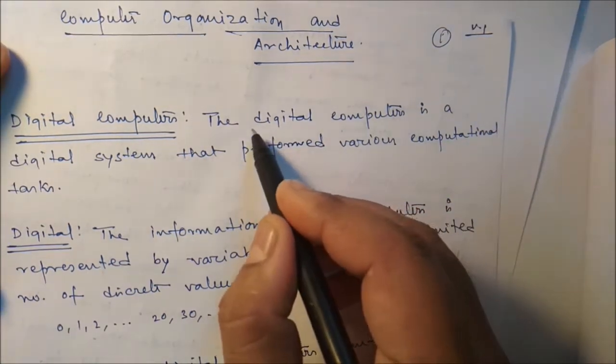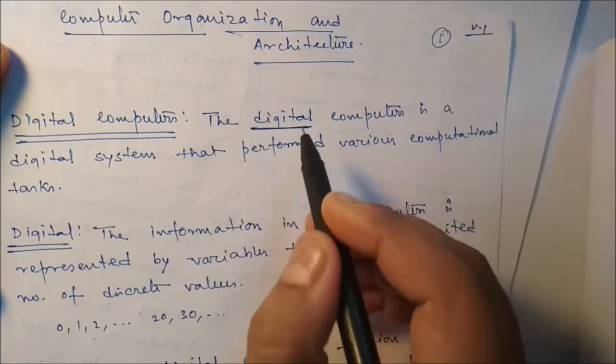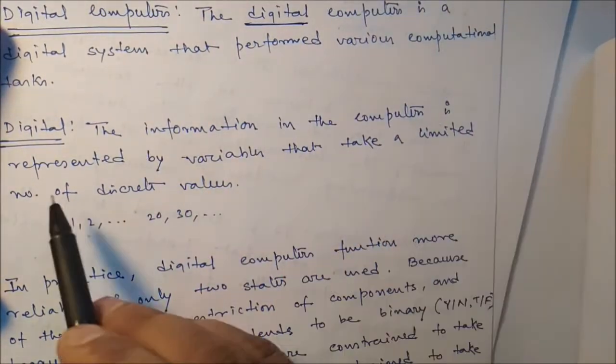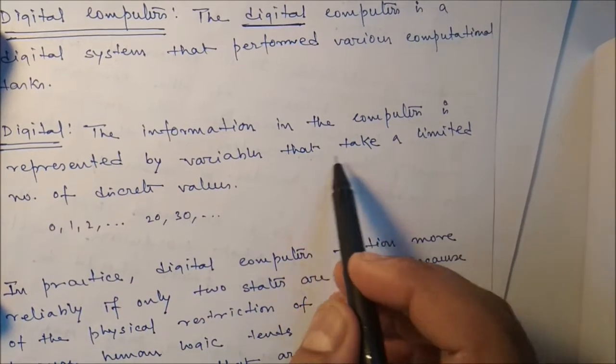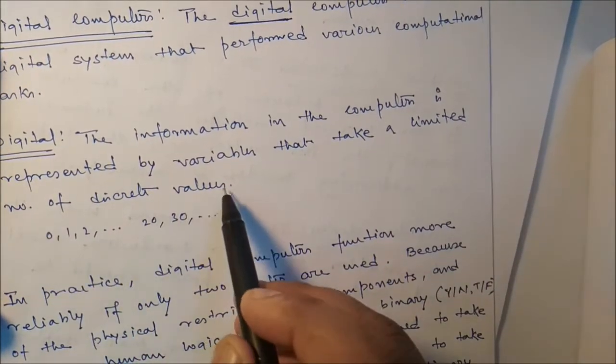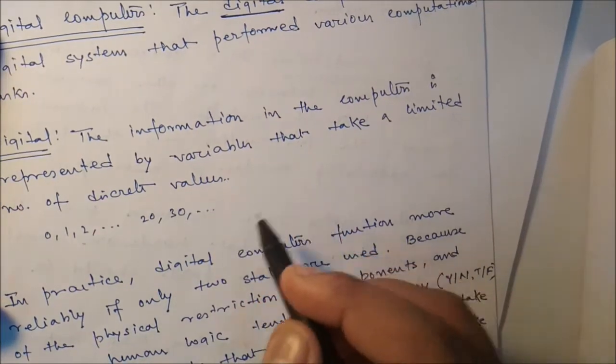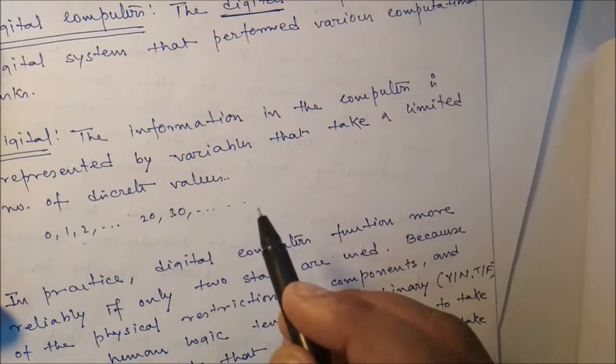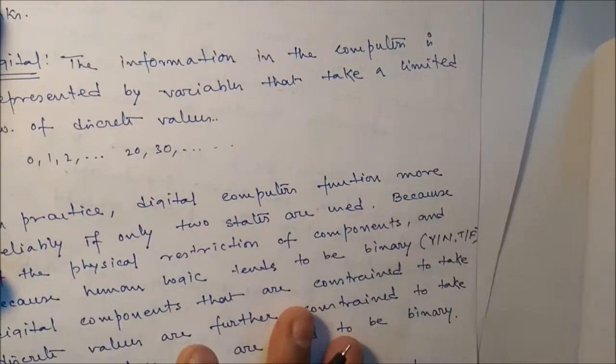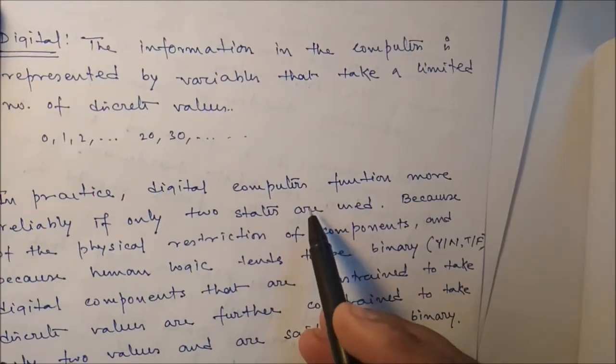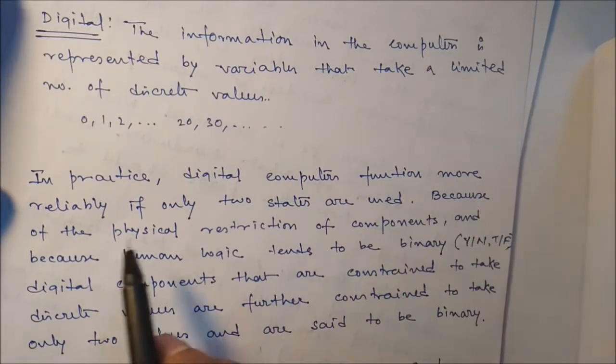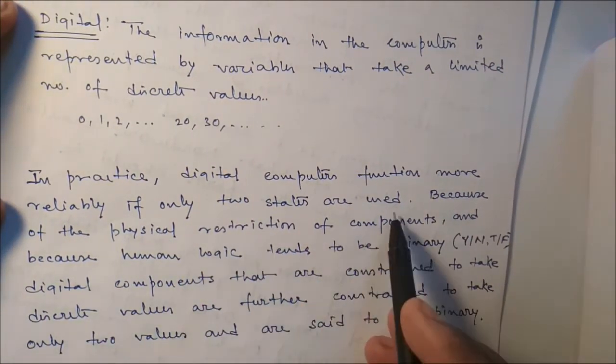What is digital? The information in the computer is represented by variables that take a limited number of discrete values - 0, 1, 2, 30, 20, and so on. But in practice, digital computers function more reliably if only two states are used.